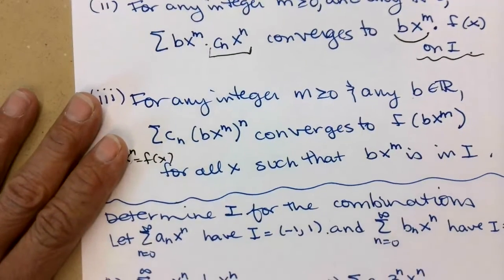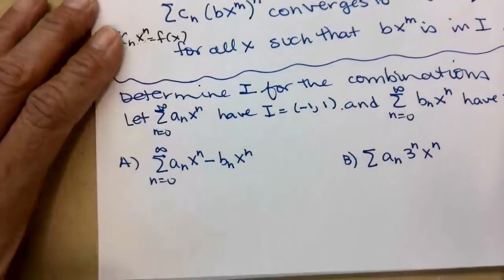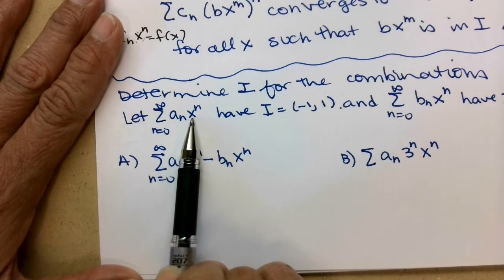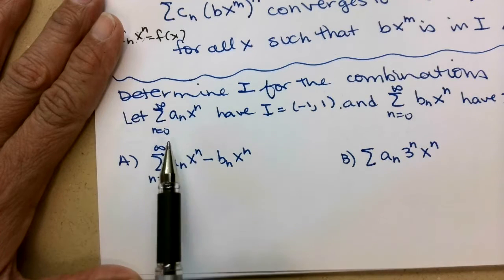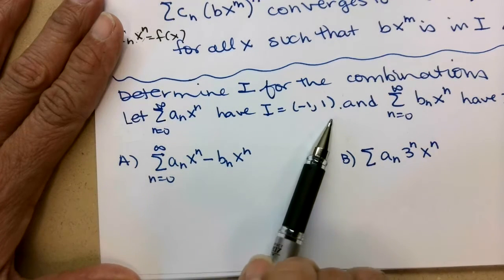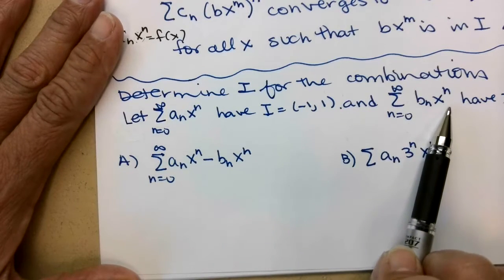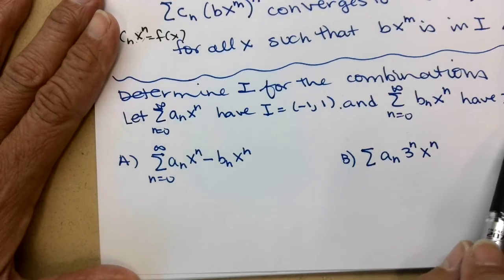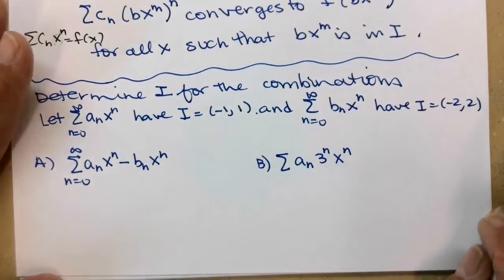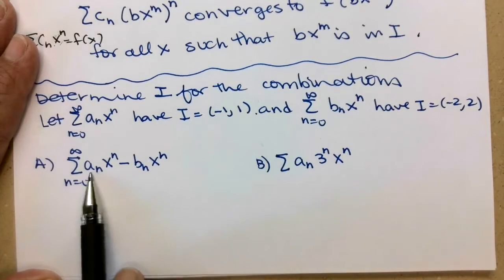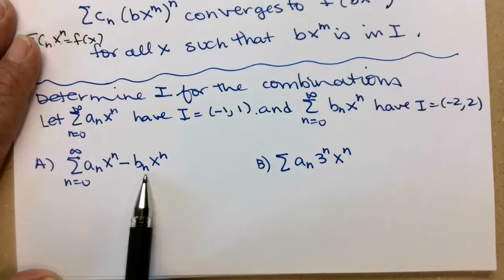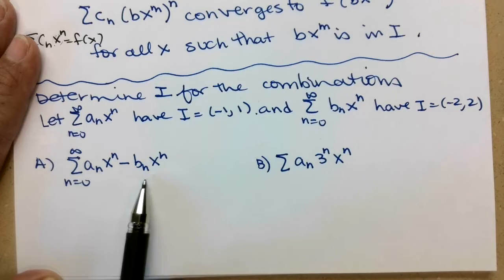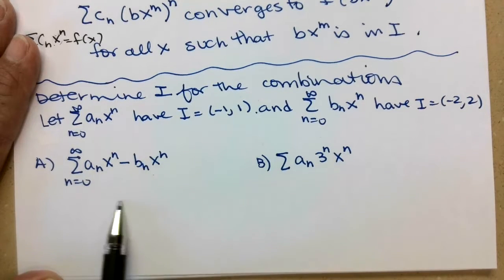Let's practice finding the interval of convergence. Say a sub n times x to the n, from n equals 0 to infinity, has an interval of convergence from negative 1 to 1, and b sub n times x to the n has an interval of convergence from negative 2 to 2. If I do the difference of the two — a linear combination — what is the interval of convergence for this new power series?